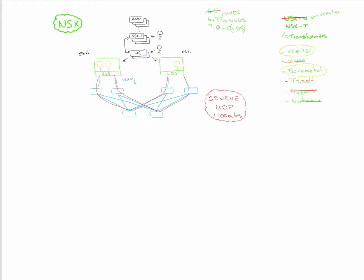We now have the ability for devices to communicate — routed or switched across the network. We haven't touched on security yet, but we also need to be able to leave the network. There may be a device outside the network, a user inside, or someone on the internet, needing to communicate into the environment. So we need to convert from the world of native IP addresses and map those through into the Geneve network.